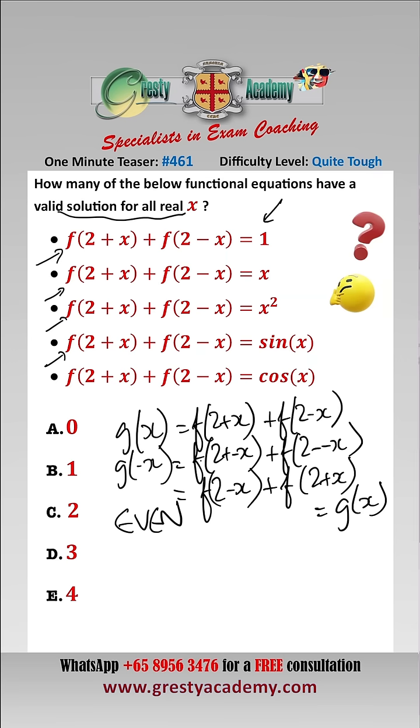So going through them one by one, well, one is a constant, and a constant is an even function. So a valid solution of this, for example, would be f of x equals one-half, so there is a valid solution there.